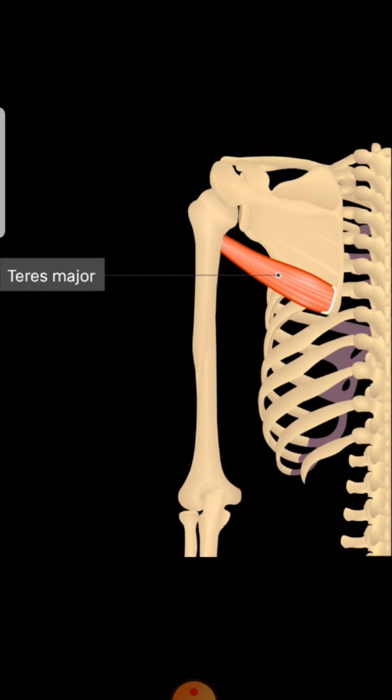The major function of the teres major muscle is to adduct and medially rotate the humerus, which is your arm. So this muscle is responsible for medial rotation and adduction of the arm. It also helps in stabilization of the scapula.